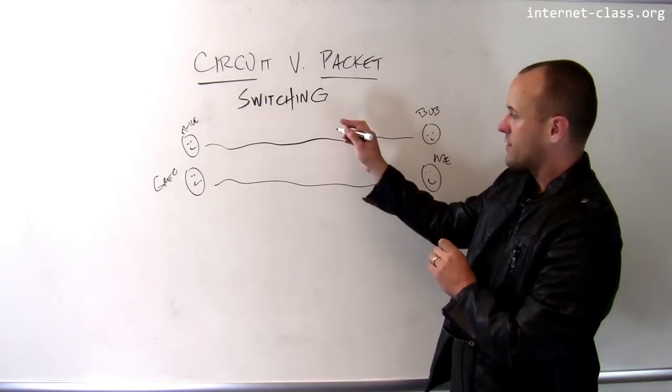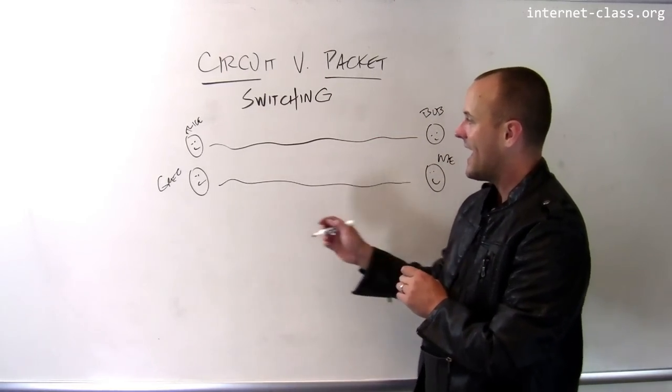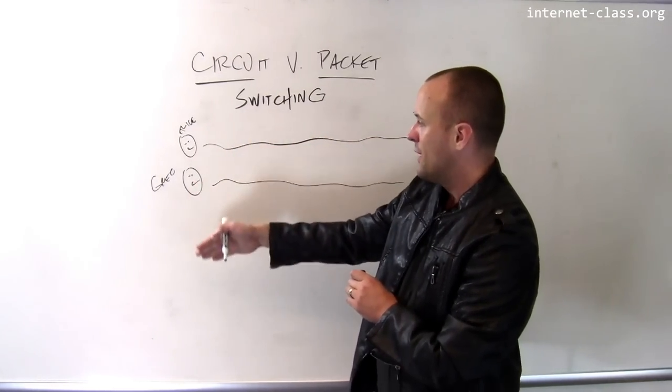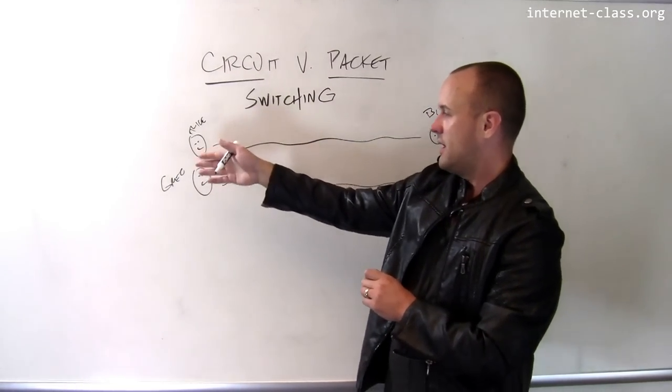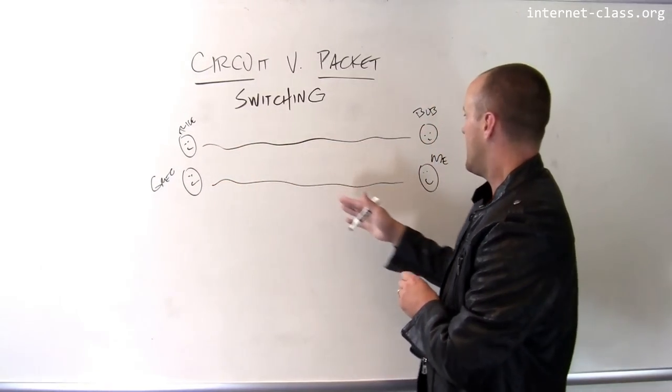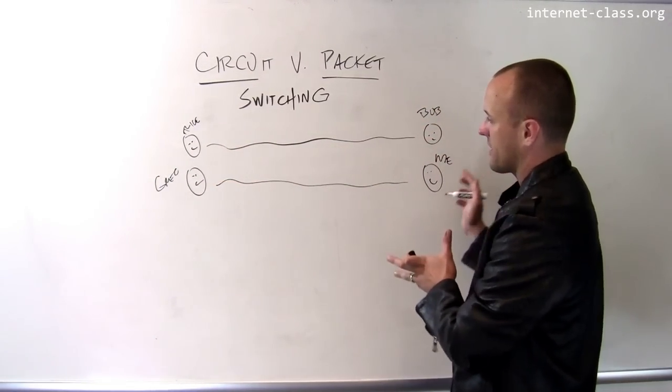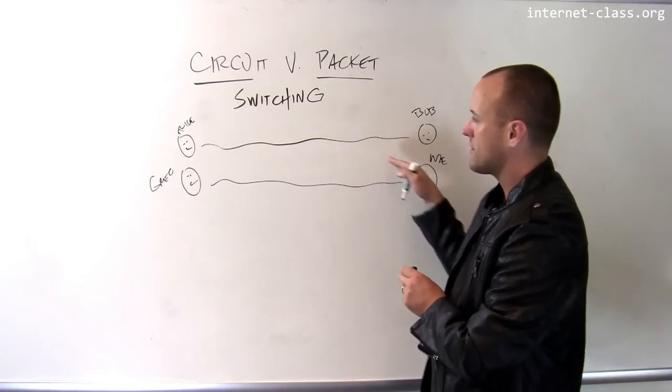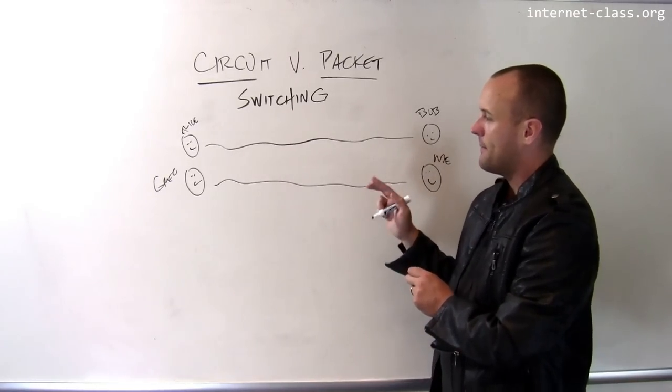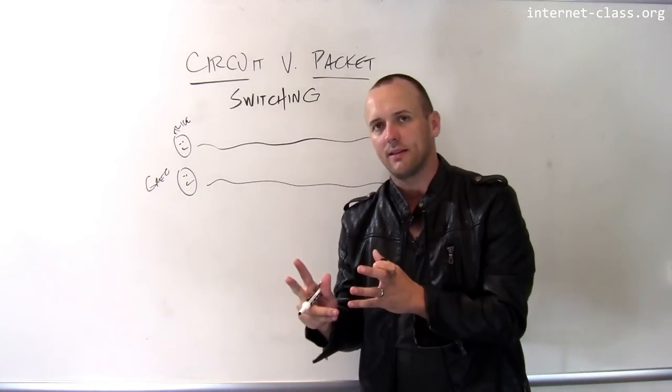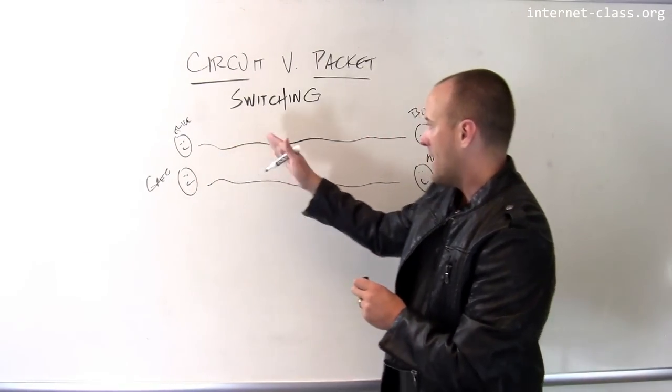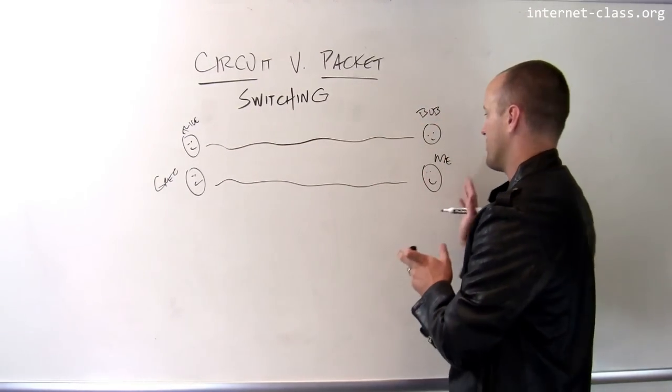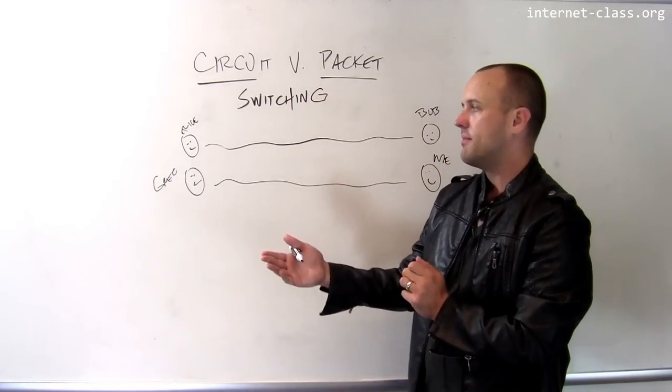Let's say that these two circuits are the only circuits that we have at a particular place. So we're making a call from the same block on the same street, and maybe these people also live next door to each other. So as soon as these two circuits are established, there's no additional capacity in the network until Alice hangs up with Bob or I hang up with Greg.